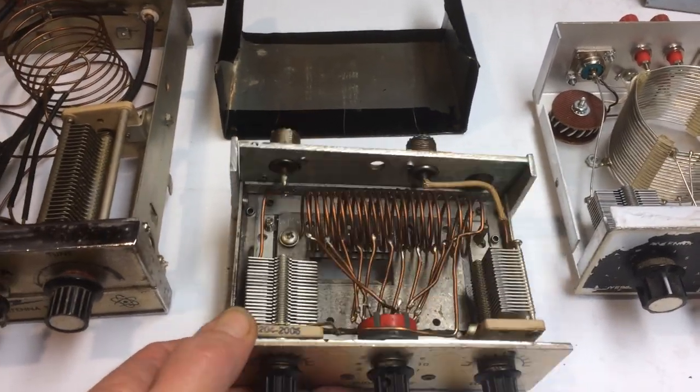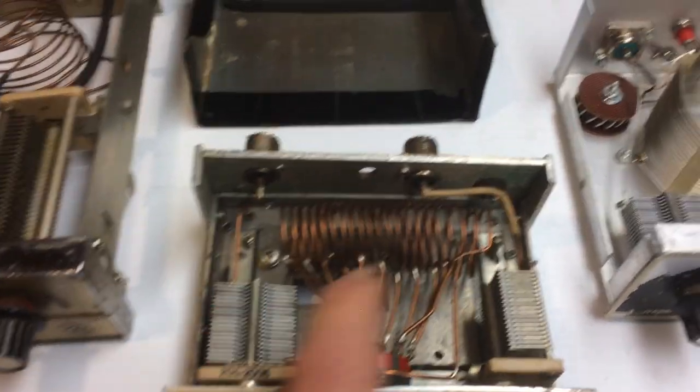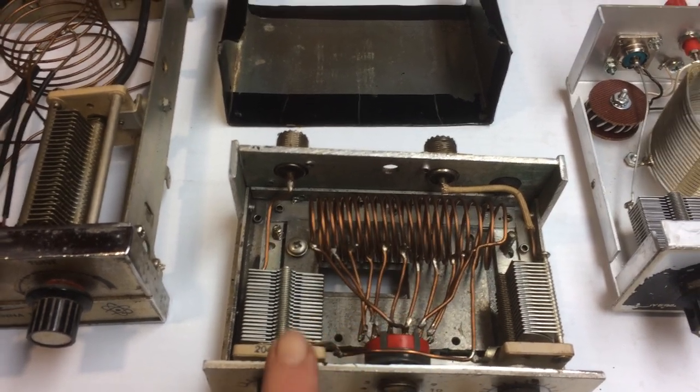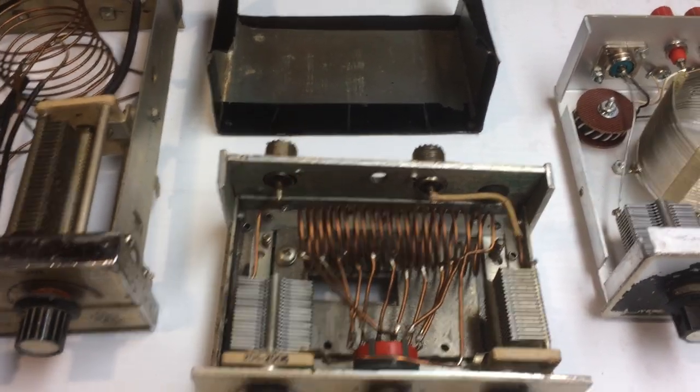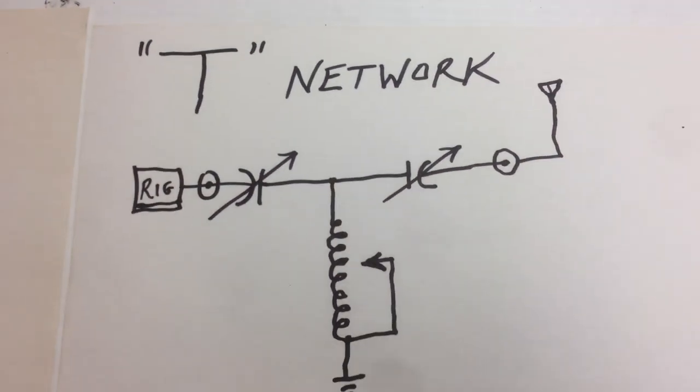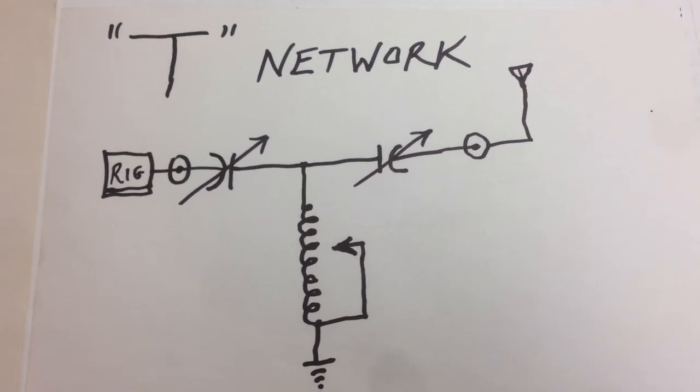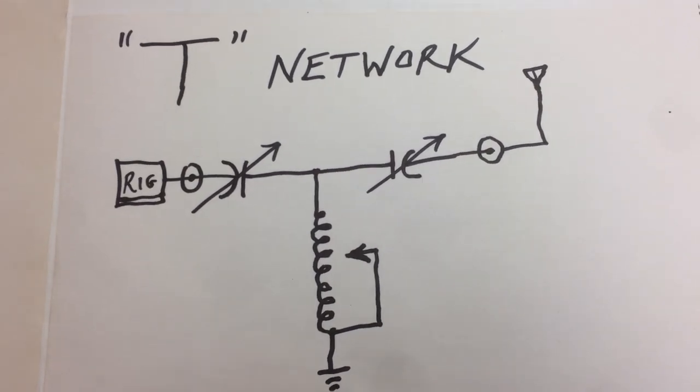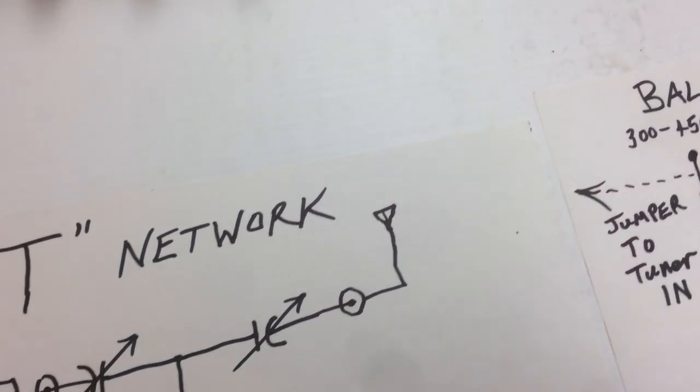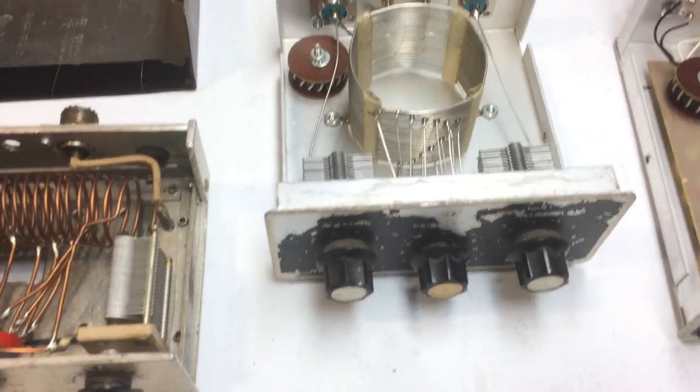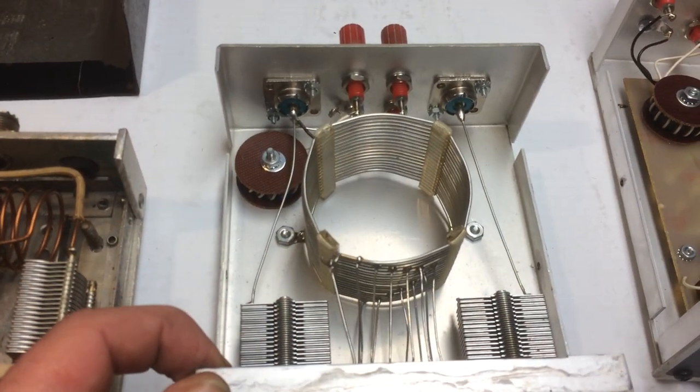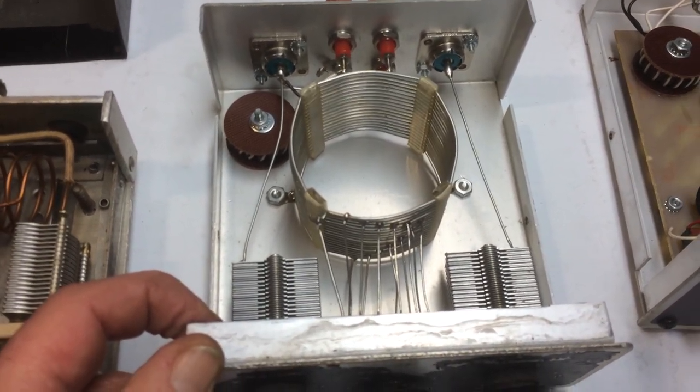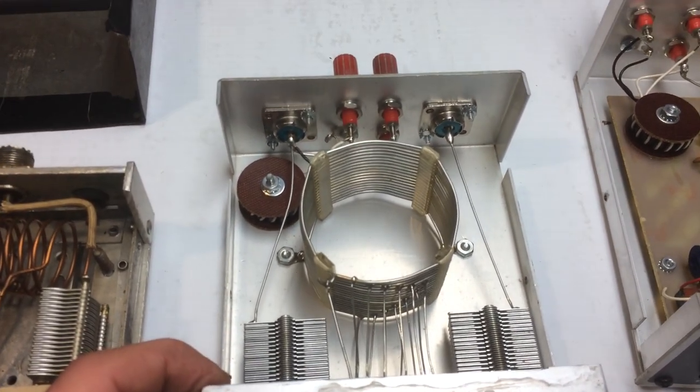But anyway, it's a simple T network. In from the antenna, through the capacitor, bypass your coil to ground, through another capacitor, and then out to your rig. So the T network, like I say, probably the most common that you're going to encounter. Very simple circuit. None of these are very complicated, certainly. This is a little T network here, and this is a factory-made device.